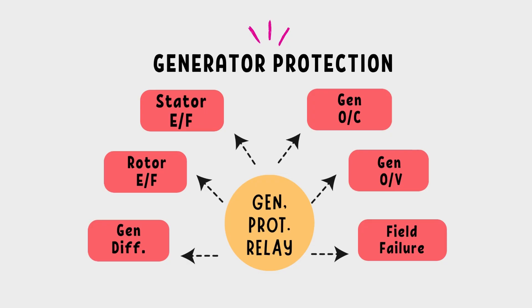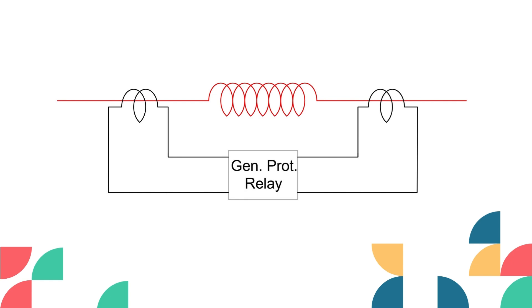In a family, each member has a different responsibility. Similarly, in generator protection, every protection has a different area of protection. The differential protection only deals with the internal faults of the stator winding. For any faults outside this zone, the relay will not act.